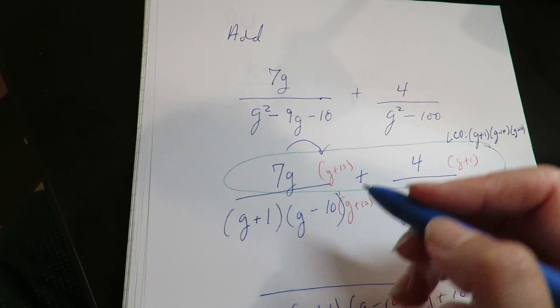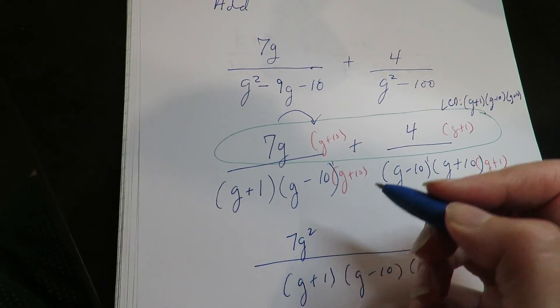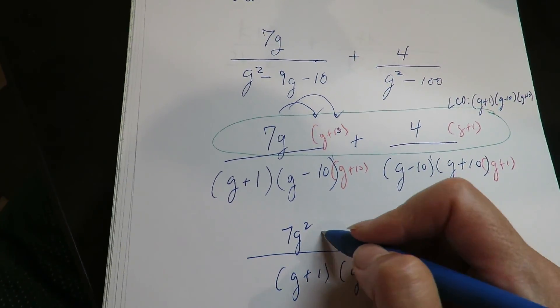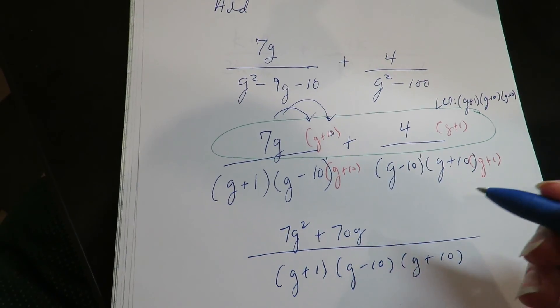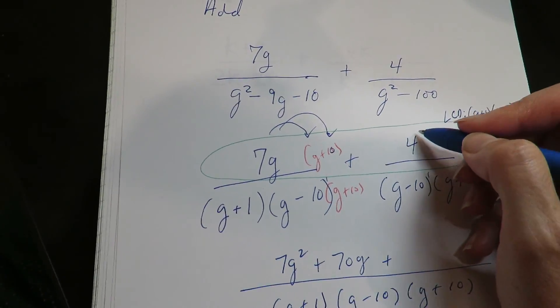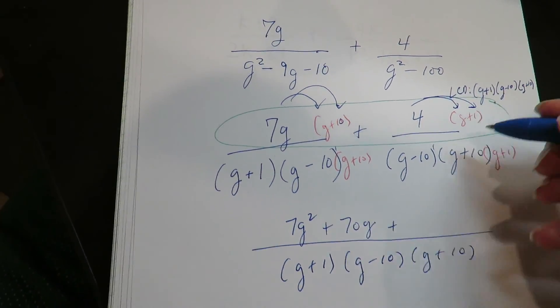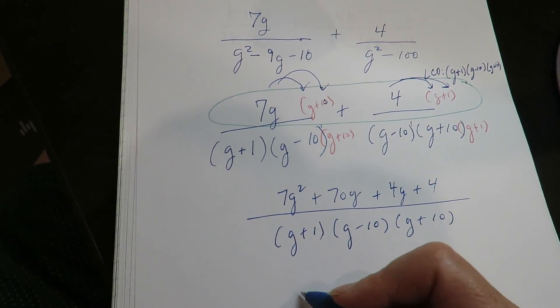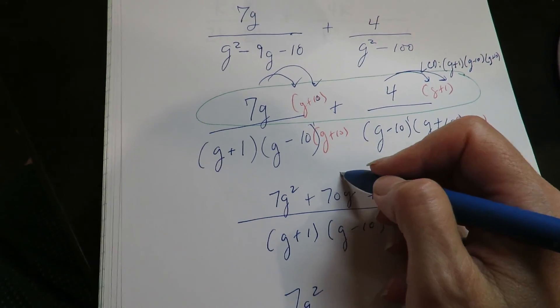All right, so I'm going to distribute the 7G. This is a 10. So distribute the positive 4. Combine like terms.